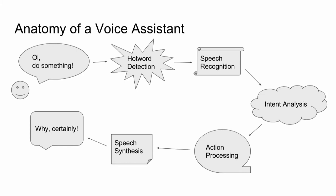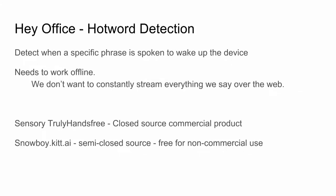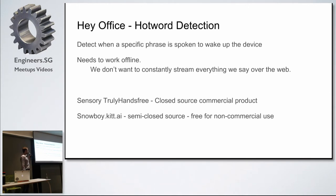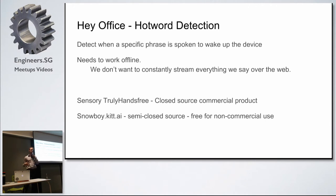Starting with hot word detection — this is when you need to detect that a specific phrase has been spoken. Ideally we want this to work offline, because we don't want to stream every sound made in our office over the internet. There's a tool by Sensory called Truly Hands Free, which is a closed-source commercial product. The one we're actually using for Hey Office is Snowboy by Kit.ai — it's semi-closed source, with the rest available on GitHub, and free for non-commercial use.